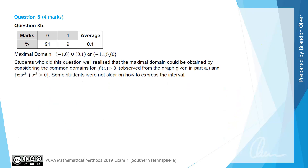From the examiner's report, less than 10% of students got the mark for this question. The examiner notes that students who did well realized that the maximal domain could be obtained by considering the common domains where f(x) > 0 and x cubed plus x squared > 0 — which is exactly what we were doing.